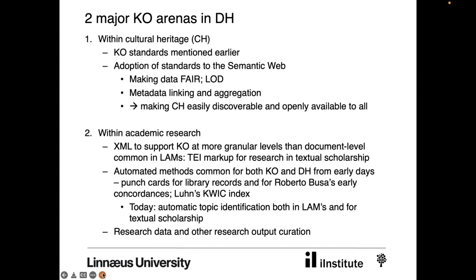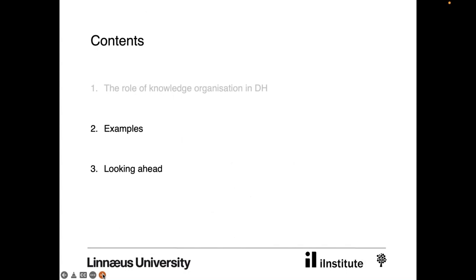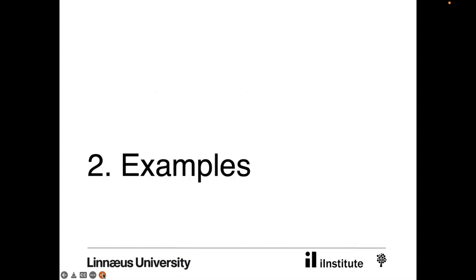Another topic relevant to knowledge organization in digital humanities is curating research data, which is complex and varied across different humanities disciplines—but not just research data, also research outputs such as databases and software created in digital humanities research projects. Having introduced our perceptions of what the role of knowledge organization in digital humanities is, let us now move on to the second part of the talk, where we will show some examples: both existing ones and missing ones, the existing ones in terms of the volume we are introducing today.